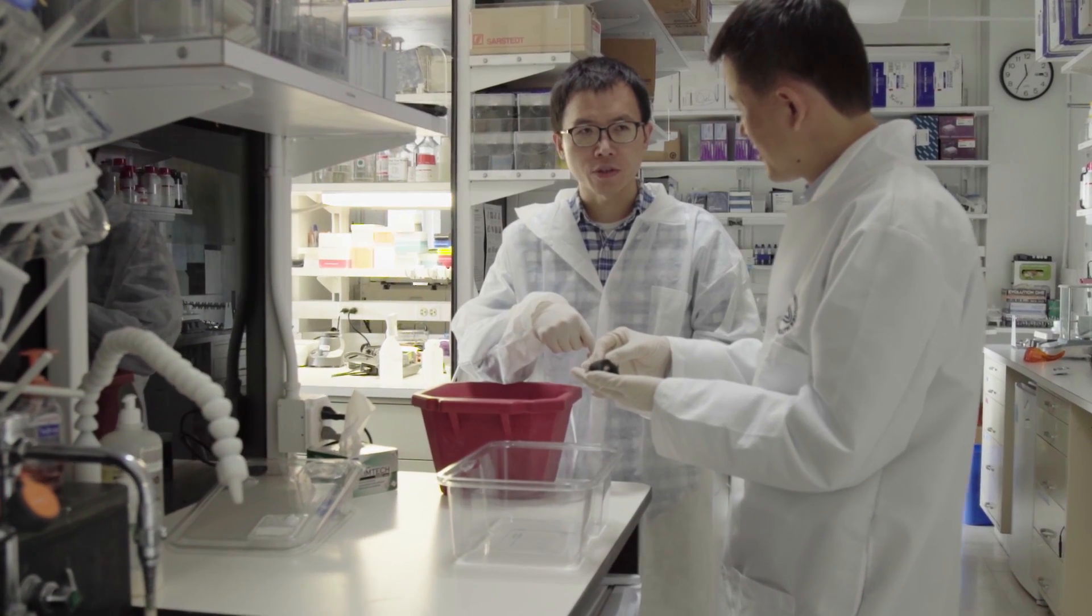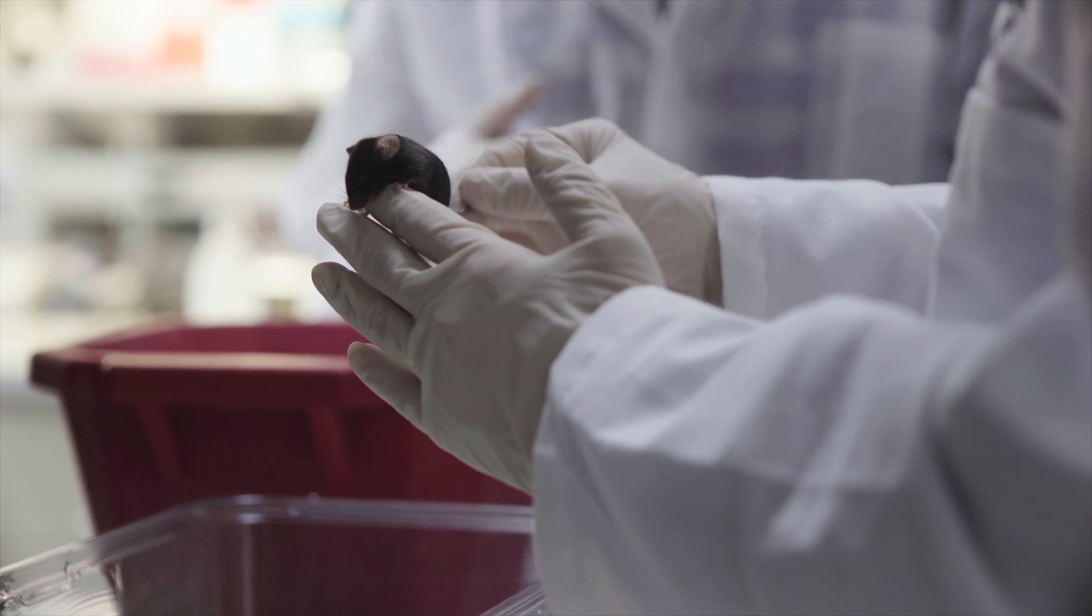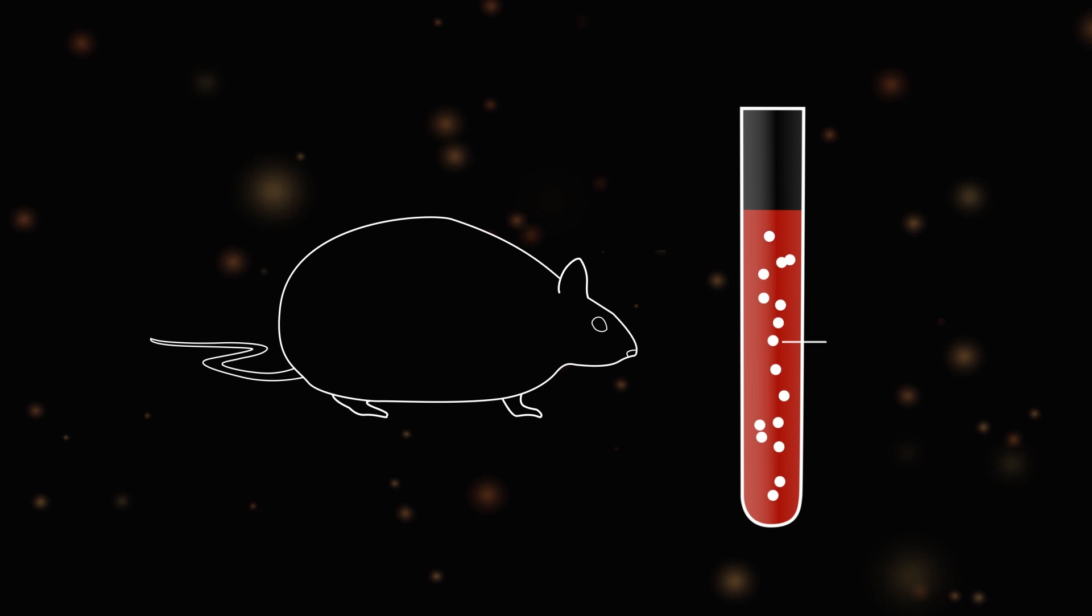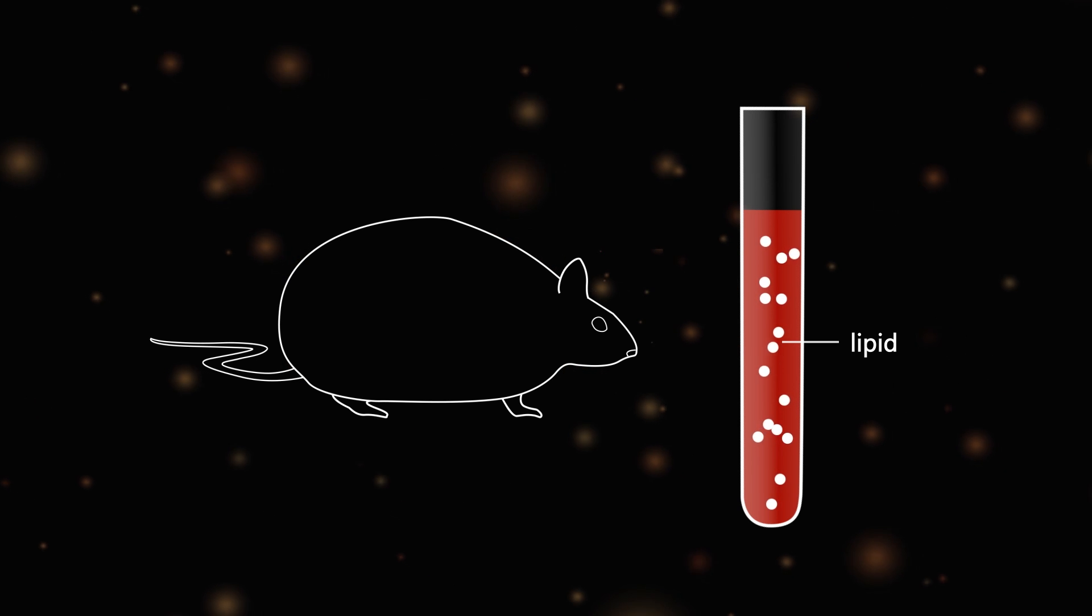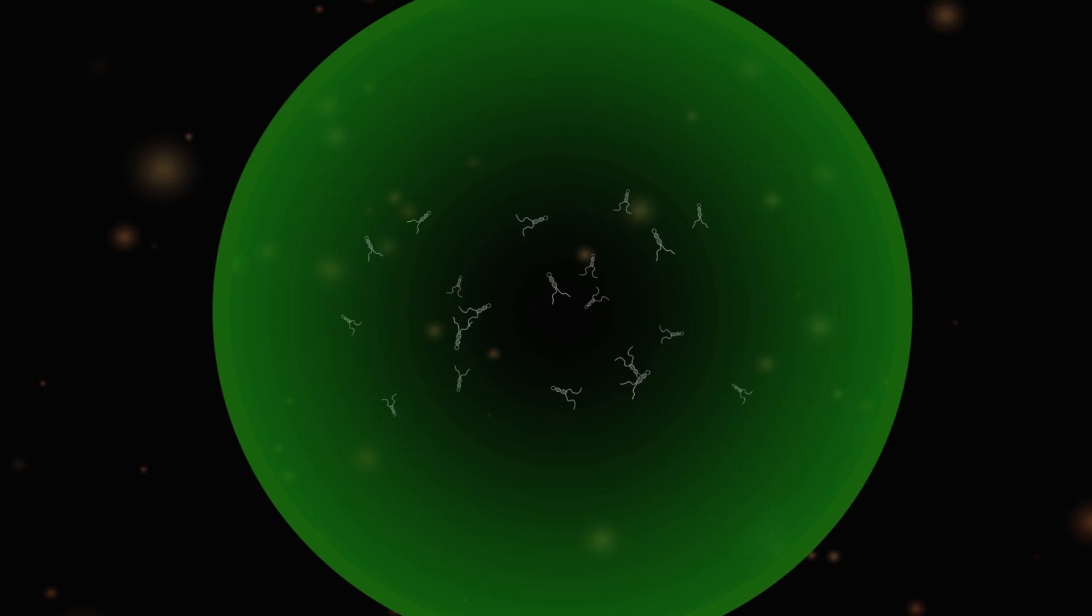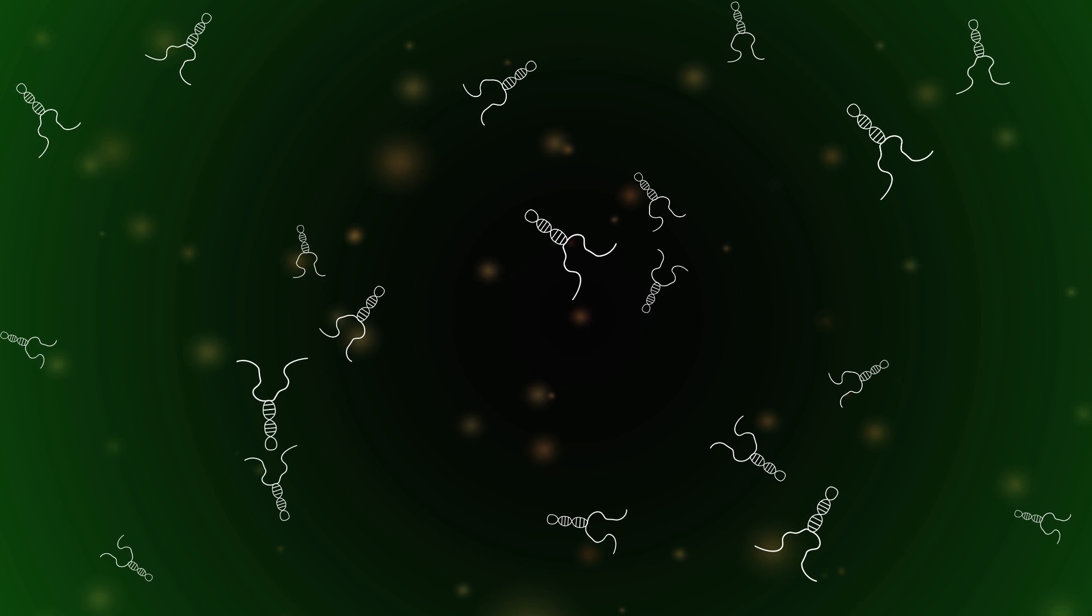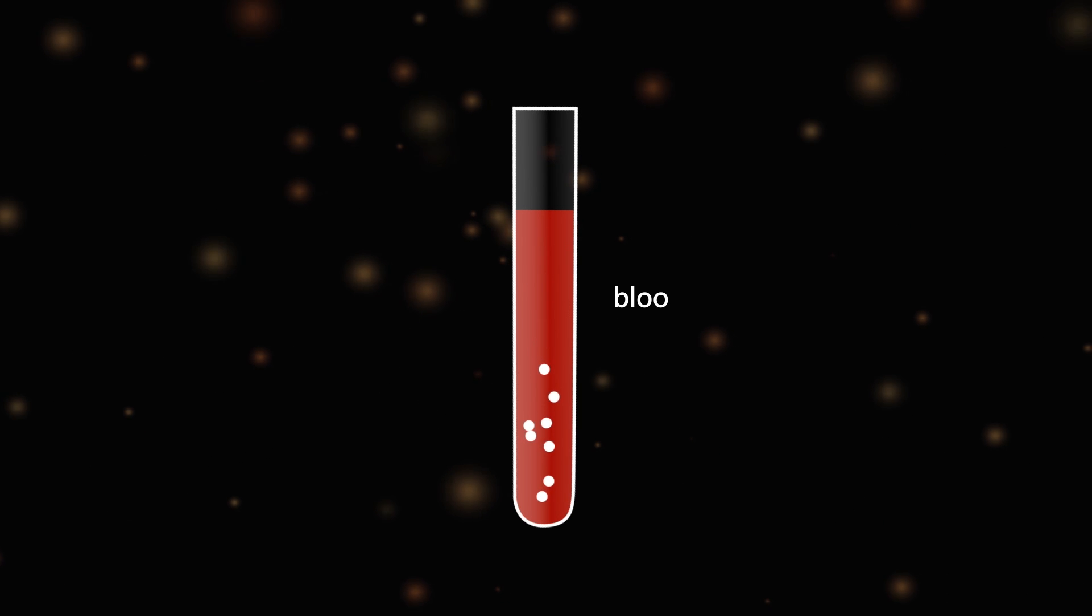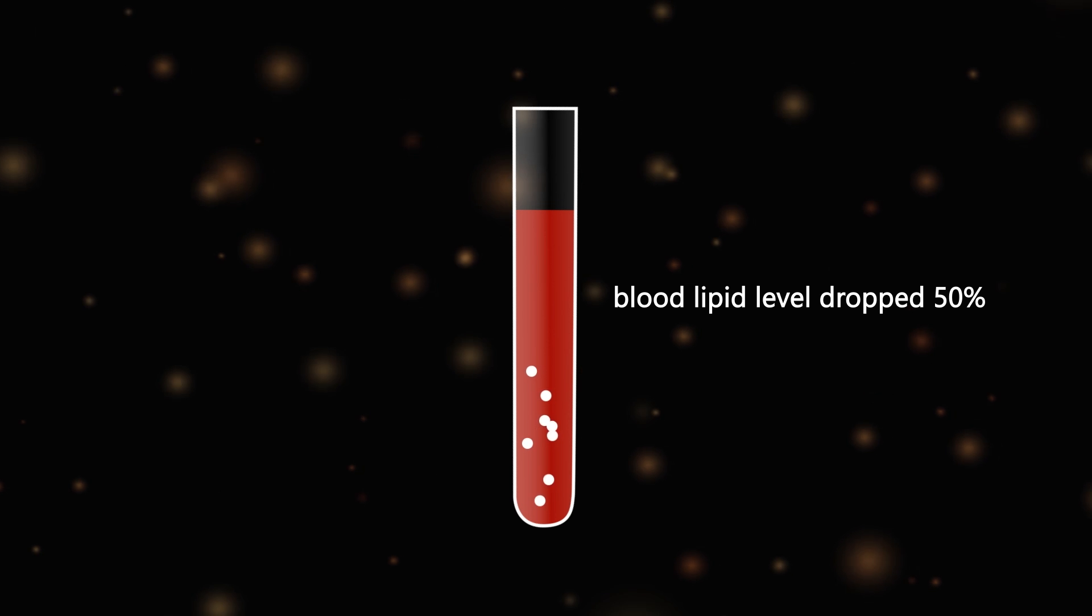The first lncRNA we studied can control blood lipid level. We have a mouse model which has very high blood lipid level and suffers from heart disease. We use a technique to inhibit the function of one lncRNA in this mouse model, and their blood lipid level dropped by half, essentially eliminating their risk for heart disease.